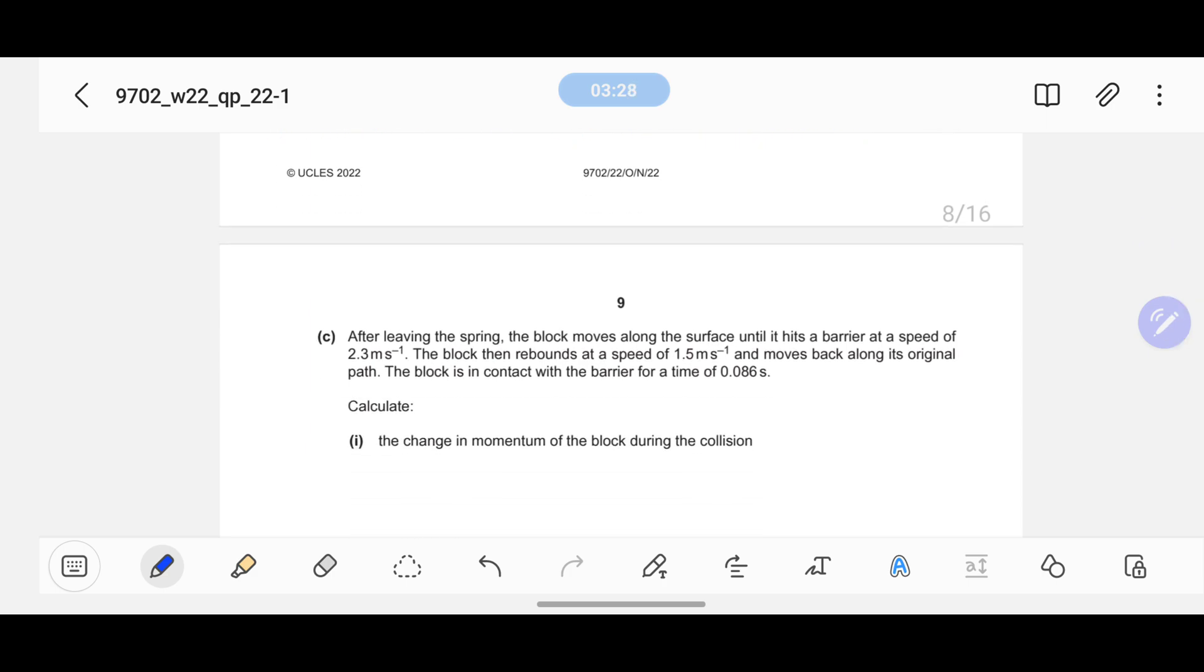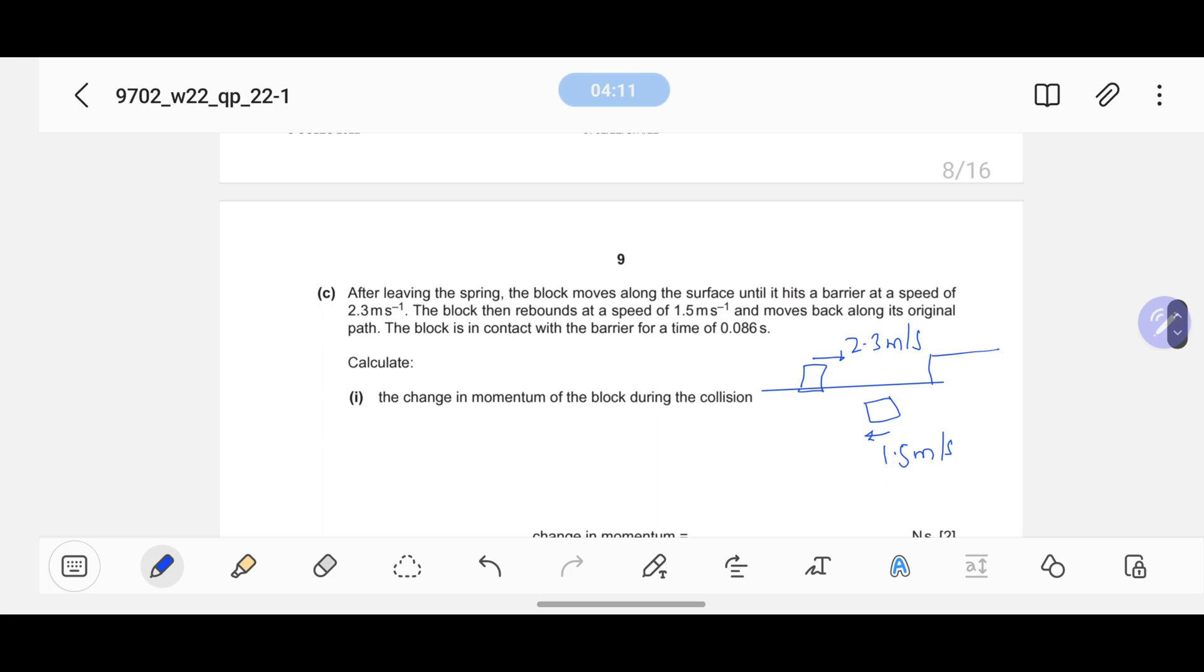Part C: After leaving the spring, the block moves along the surface until it hits the barrier at a speed of 2.3 meter per second. The block then rebounds at a speed of 1.5 meter per second. This means as the spring leaves, the block moves along a surface until it hits the barrier. For example, this is your surface and this is a wall, a barrier. When the block was moving towards the barrier, its speed was 2.3 meter per second. When it hits and bounces back, the velocity is 1.5 meter per second. He's asking for the change in momentum. The block is in contact with the barrier for a time of 0.08 seconds, that will work for the impulse.